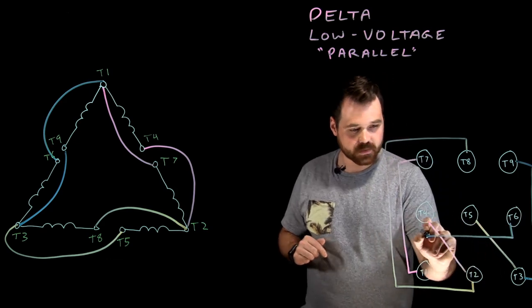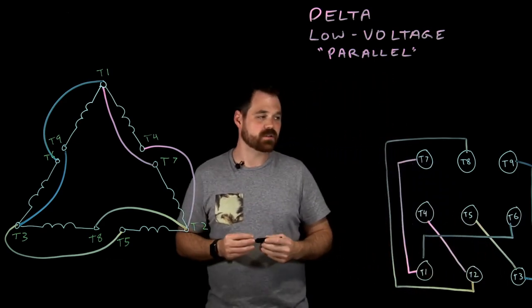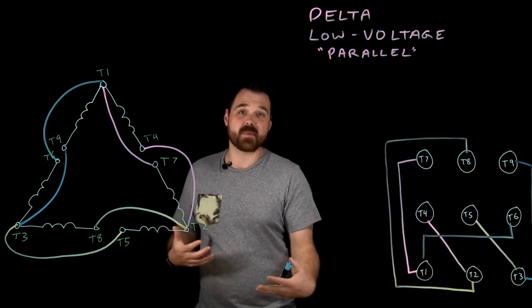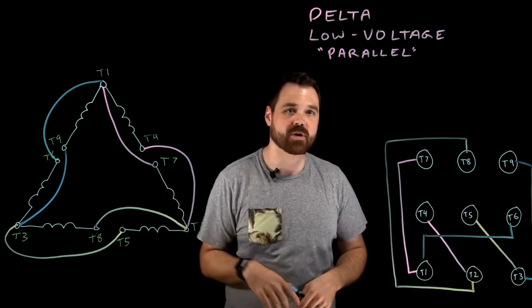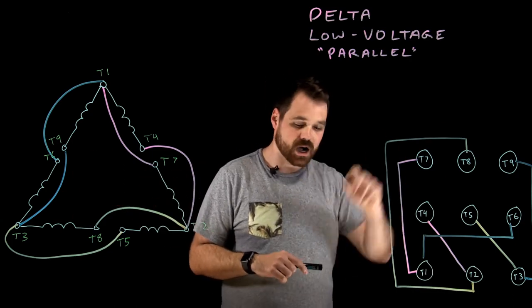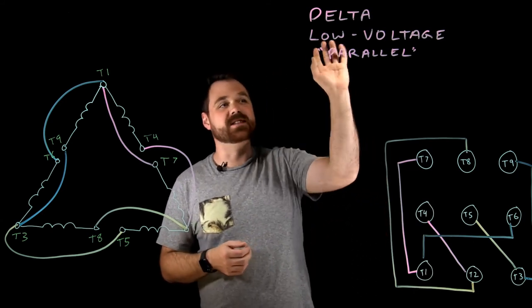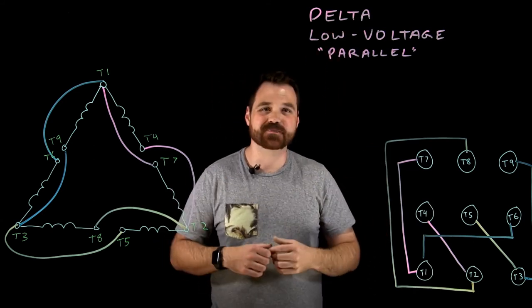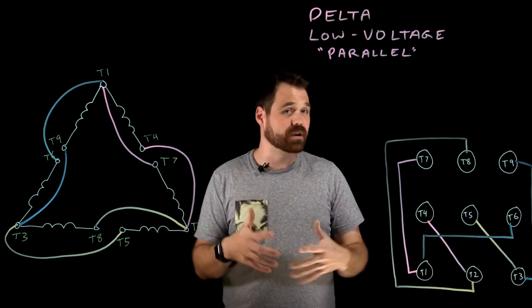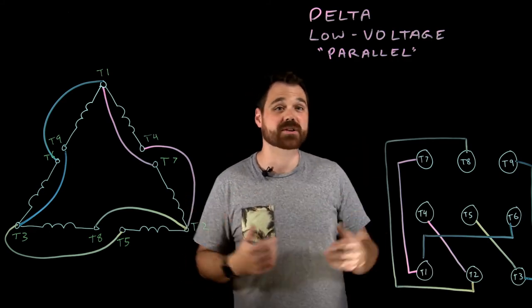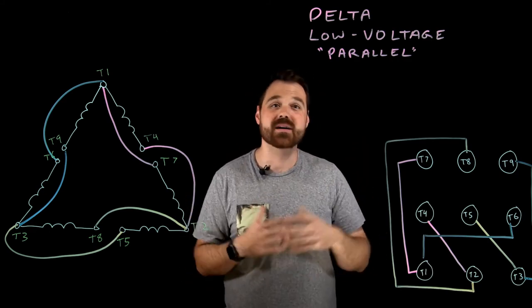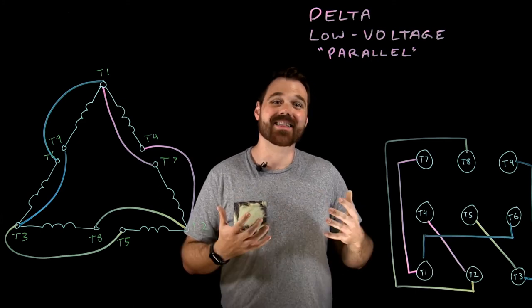So in this case, that would be my connections. I would actually just need the three wire nuts, and then that's how I connect it up. So that's a low voltage delta parallel connection. Don't forget, if you're looking for high voltage or wye motors, I have a bunch of other videos coming out on that as well. Thanks for watching.